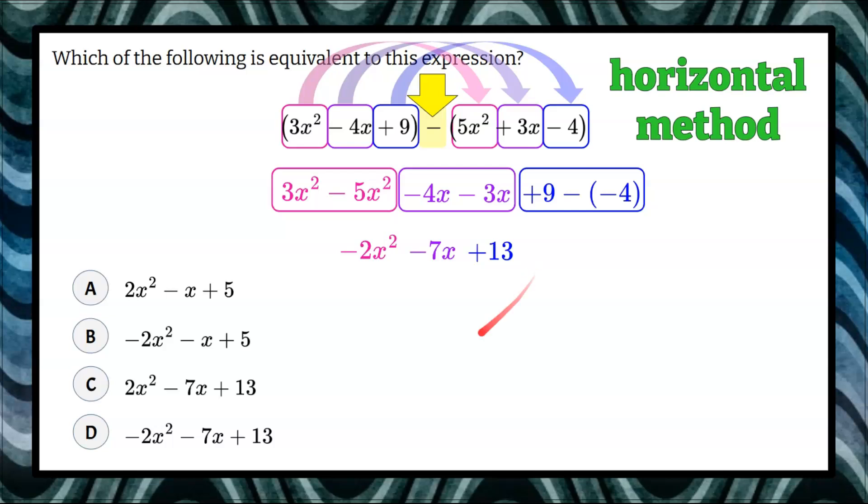So now we check, and we can see that that is answer choice D. And that's how you do it the horizontal way.